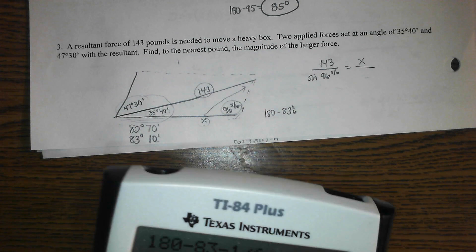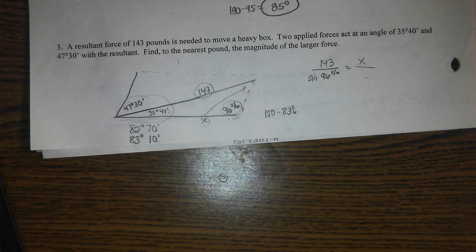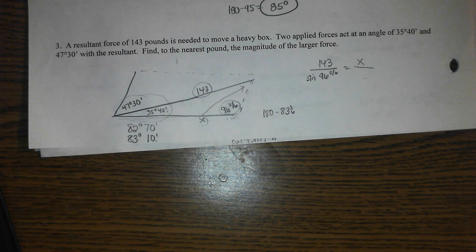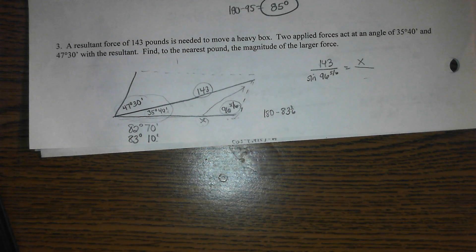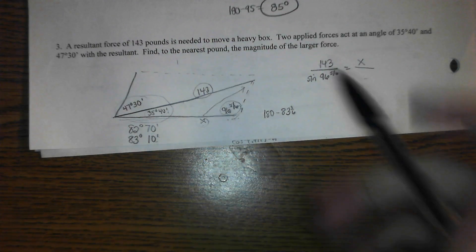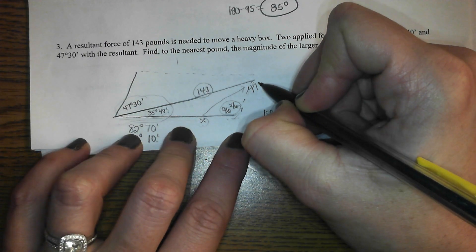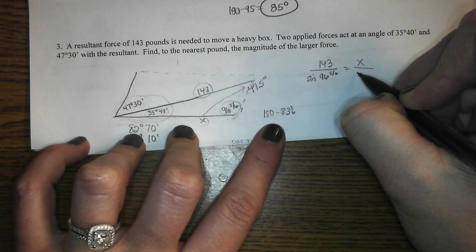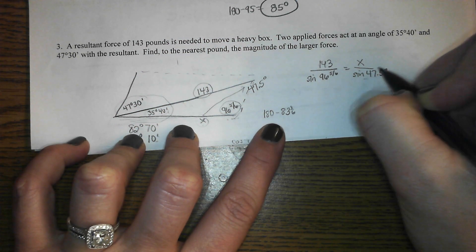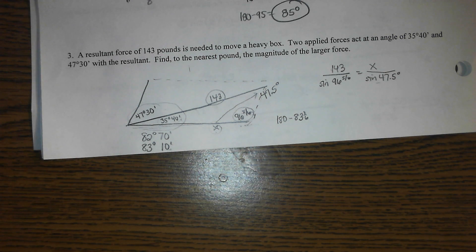So right now, 180 minus 35 and 2/3, because that's 35 and 2/3, minus 96 and 5/6, leaves you with 47 and a half degrees. So the sine of 47.5. And then just cross multiply. So yeah, the minutes and the seconds make that one nastier than it really needed to be.